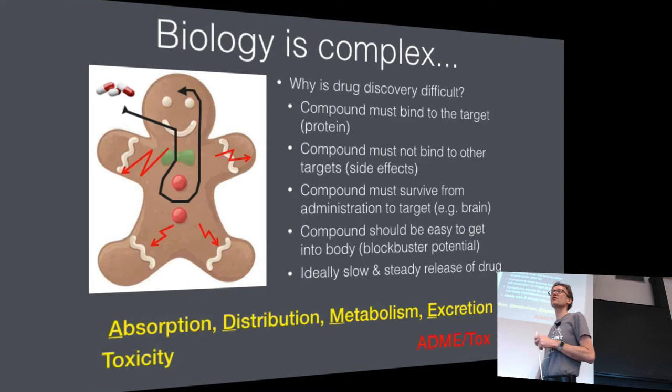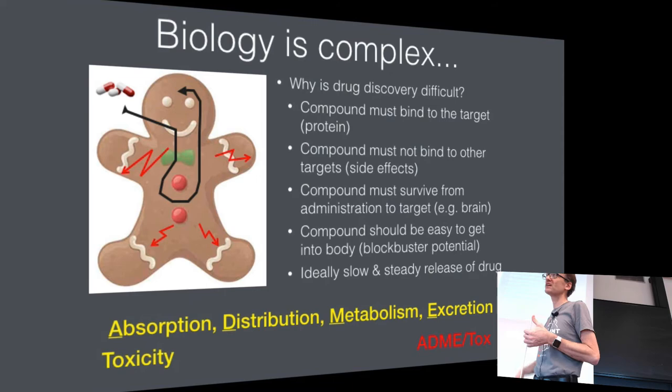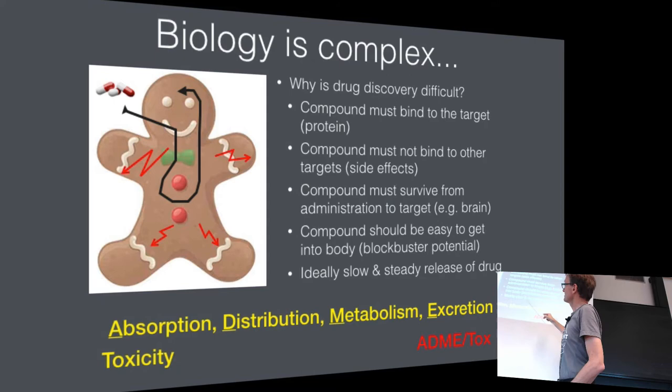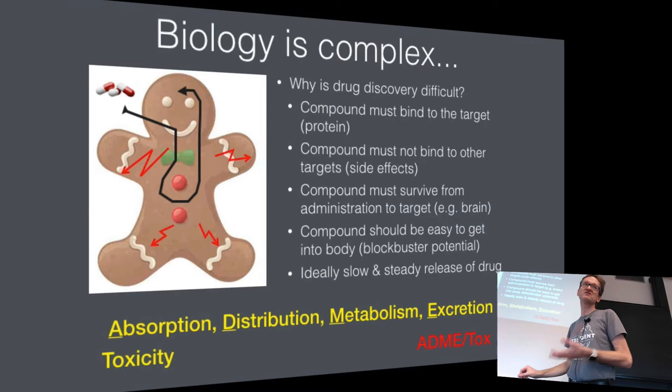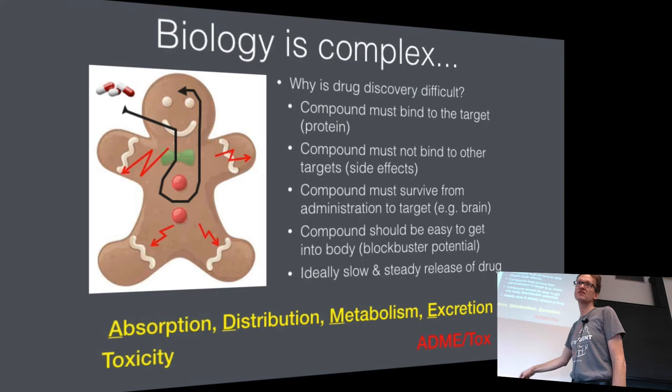You must also get the drug to survive from administration — eating it — to where the target is, say the brain. Your entire stomach is designed to destroy things; anything that's a protein gets digested. There's also a special blood-brain barrier the body uses to protect against things crossing over. If you want a blockbuster drug, you want something the patient can eat, because no patient wants five injections a week just to feel slightly healthier. You also want a slow and steady release so you don't need to take pills constantly.